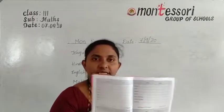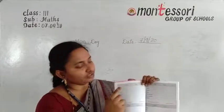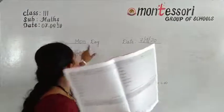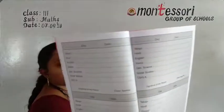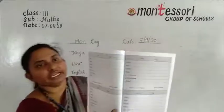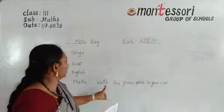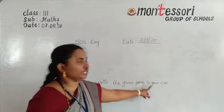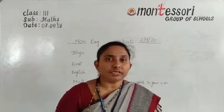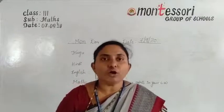This is your daily writing home task page. Today is Monday. Write today's date in the diary. In the Max subject column, write the given points in your classwork. I have given five points — copy those points in your classwork and send to the concerned WhatsApp group.